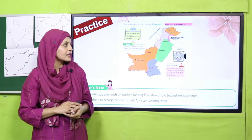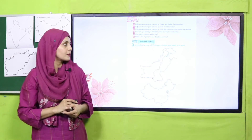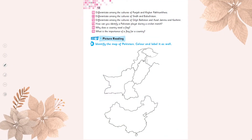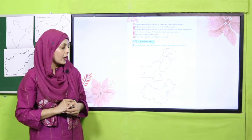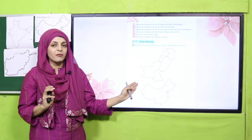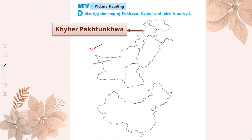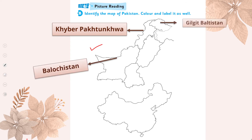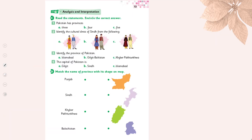The important areas are Gilgit Baltistan, Azad Jammu and Kashmir, and Islamabad as capital. Now quickly open page number 12 in your books — picture reading. Identify the map of Pakistan, color it, and label it. You have just identified the map of Pakistan, so it is easy. You will write the names of the provinces and important areas and then color them.